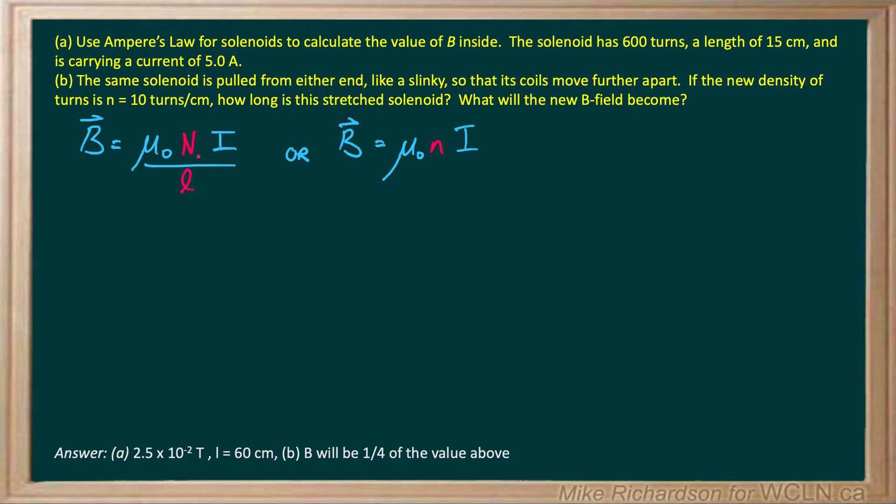Capital N is the total number of turns. L is the overall length of the solenoid - the physical length of the coil, not the wire unraveled. Little n is simply turns per length. They're the same equation - little n is just N divided by L.